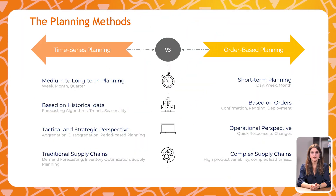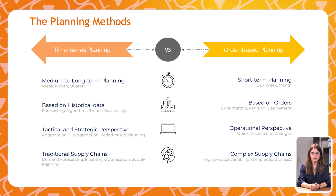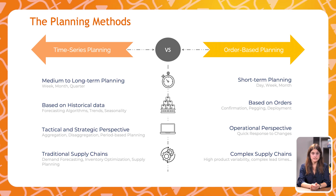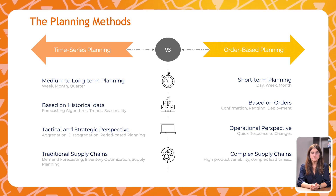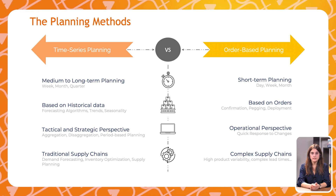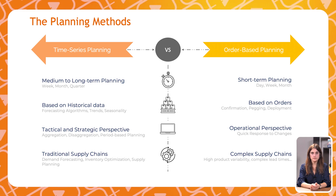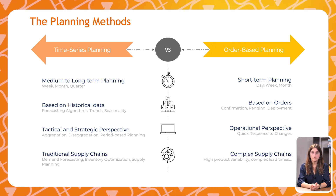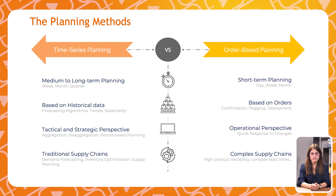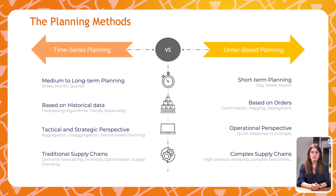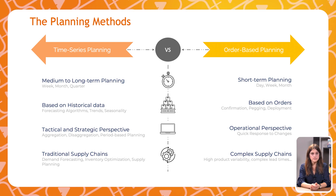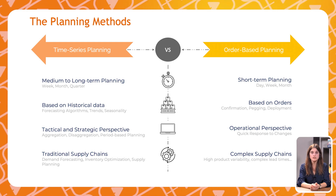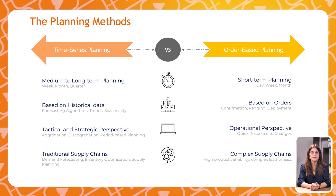Order-based planning, present in the response and supply module, steps in to fill this gap. In contrast, this planning method works directly with individual orders that can be integrated from and to your ERP system, allowing for more detailed and precise planning. It considers the relationships and dependencies between these orders by pegging the supply to the demand and giving the option to confirm and deploy them.